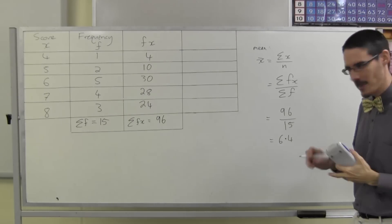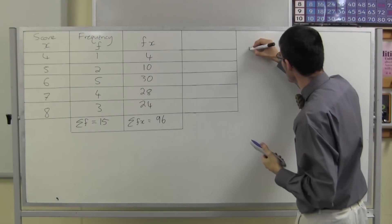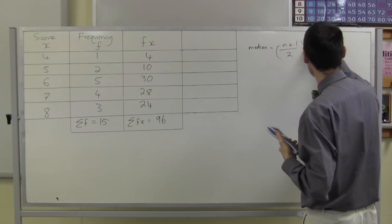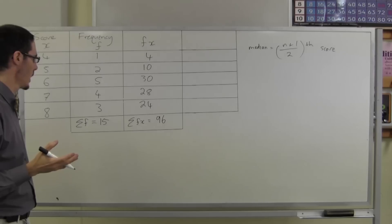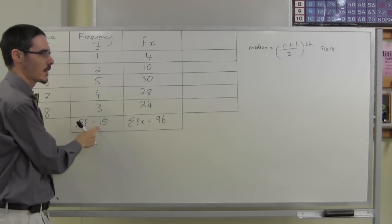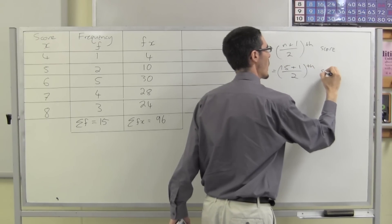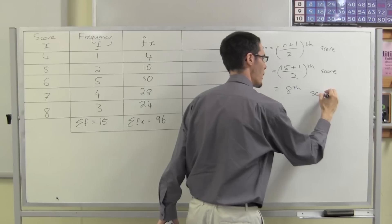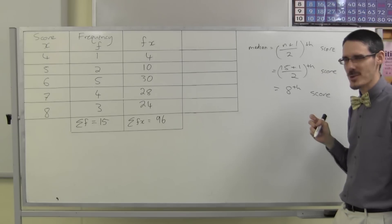What about the median? Remember the formula: the median is the (n+1)/2 score. So think carefully — how many scores are there? There's not 5, there's actually 15. So it's the (15+1)/2 score, which is 16 divided by 2, the 8th score. Where am I going to find the 8th score?